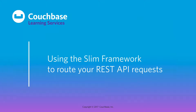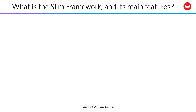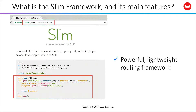In this lab, we'll briefly survey the SLIM framework that will be used in the labs ahead to handle your REST API requests. The SLIM framework is a powerful, lightweight routing framework that uses an approach to routing first made popular through a tool called Sinatra, and that you may also be familiar with through powerful tools like Laravel. You could think of SLIM as a very slimmed-down version of Laravel.